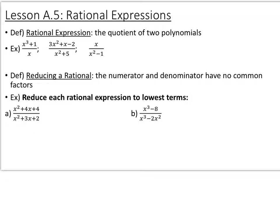We want to talk about reducing a rational expression, where the numerator and denominator have no common factors. If we look at this first example, x squared plus 4x plus 4 over x squared plus 3x plus 2, in order to reduce a rational expression the first thing we need to do is factor both the numerator and the denominator. Go ahead and pause the video and factor both the numerator and the denominator for both example a and example b.